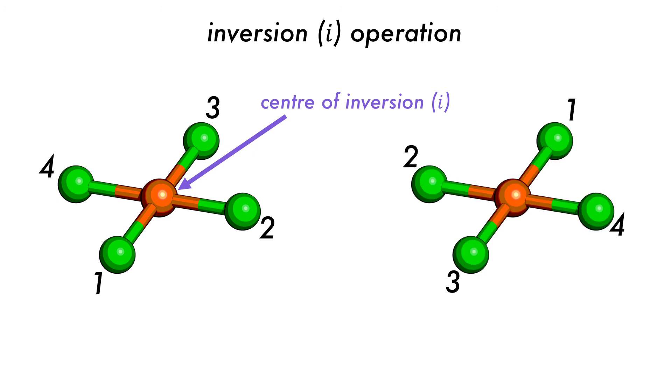As a result, atom 1 interchanges with atom 3 and 4 with 2, leaving the molecule seemingly unchanged.